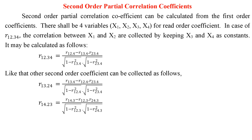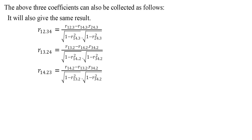Second-order partial correlation coefficients can be calculated from the first-order coefficients. There shall be four variables x1, x2, x3, x4 for second-order coefficients. For the correlation between x1 and x2 keeping x3 and x4 as constants, the formula may be applied. Similarly, other second-order coefficients can be calculated.